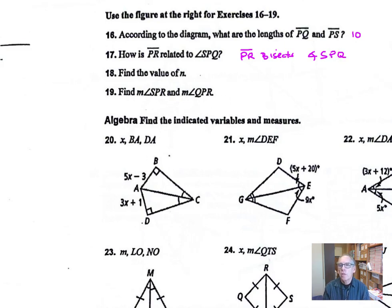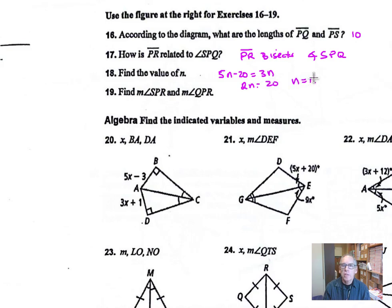Find the value of N. These two angles are equal to each other, so we have 5N minus 20 equals 3N. Adding 20 to both sides and taking away 3N gives 2N equals 20, so N equals 10. Find the measure of angle SPR: that's 5 times 10 minus 20, which is 30. Angle QPR is likewise 3 times 10 equals 30 degrees.